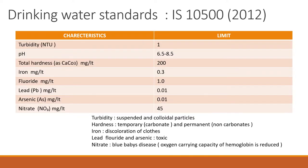Coming to water quality standards, we have drinking water standards IS 10500-2012 — Indian standards given for various water samples. These water samples have various parameters. If turbidity is high, the water is not good for drinking — it should be as low as possible, less than 1 is always better. pH should be in the normal range: 6.5 to 8.5. If water is acidic or basic, it is not fit for drinking.